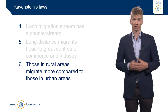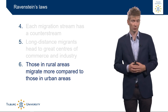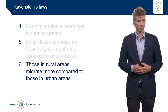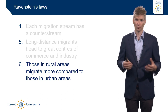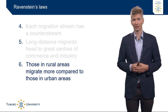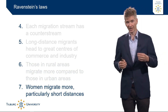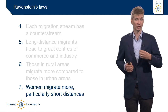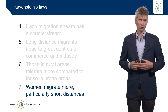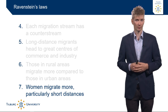The sixth law is that those in rural areas migrate more compared to those in urban areas — something we still see today, as people in agricultural regions are much more likely to move to urban areas. Finally, Ravenstein also noted a gender dimension: women migrate more than men, and are particularly more likely to move short distances.